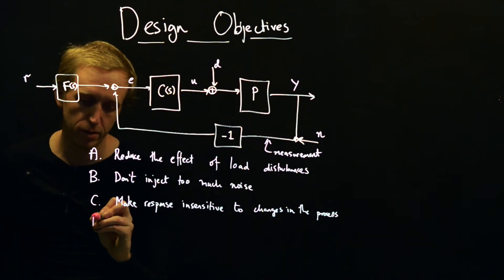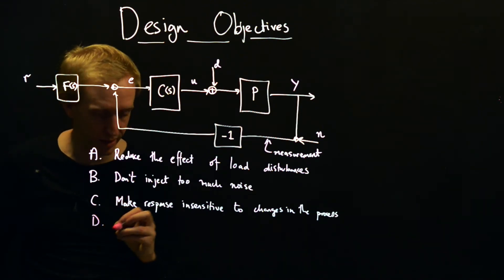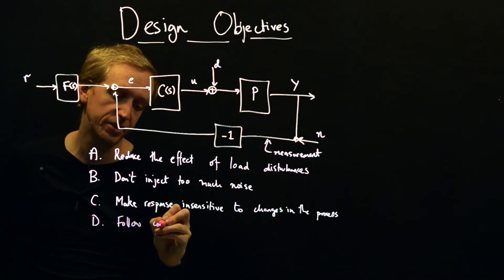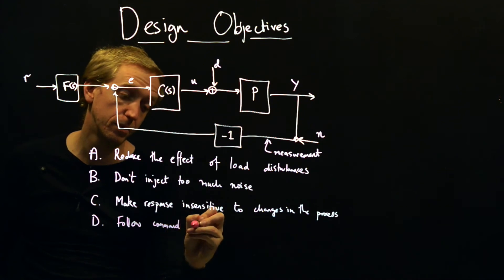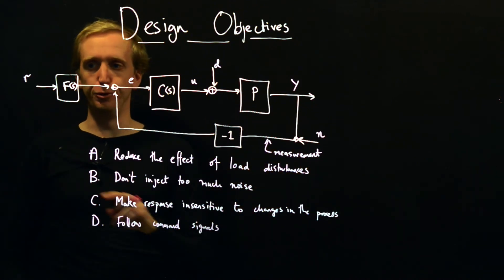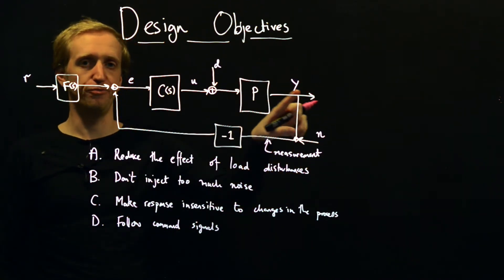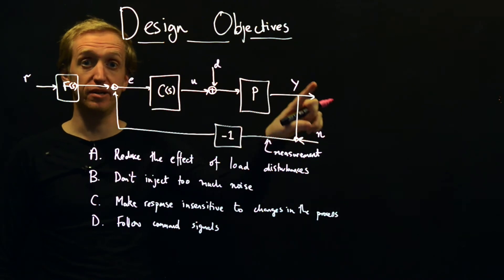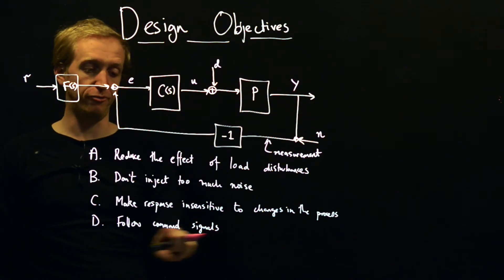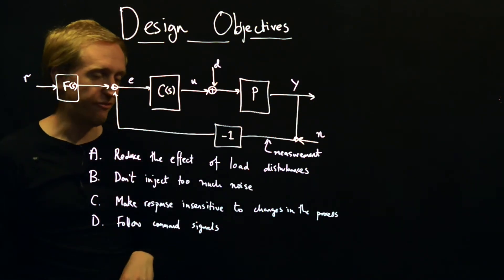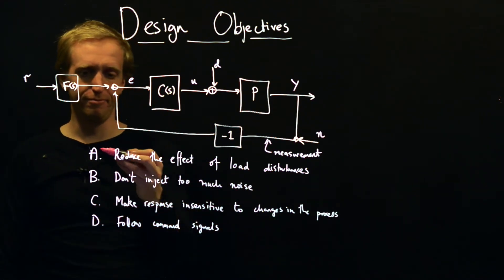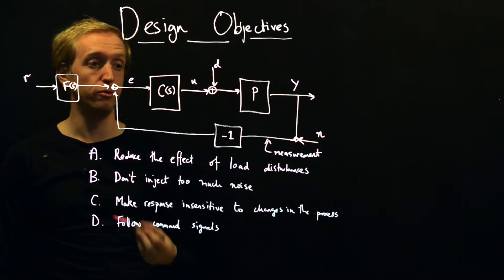And then finally, we've already talked about it, is follow command signals. So this is to get the thing to do what you want it to do. I want this velocity. Hopefully, the output velocity of the car will match the reference. So this is your final objective. And this is a fairly high level roadmap for a set of objectives for good control system design.